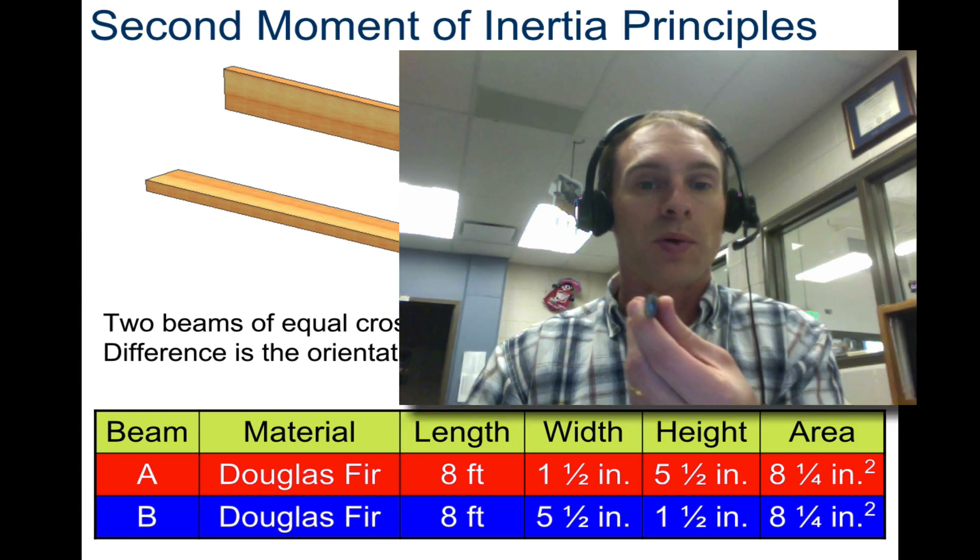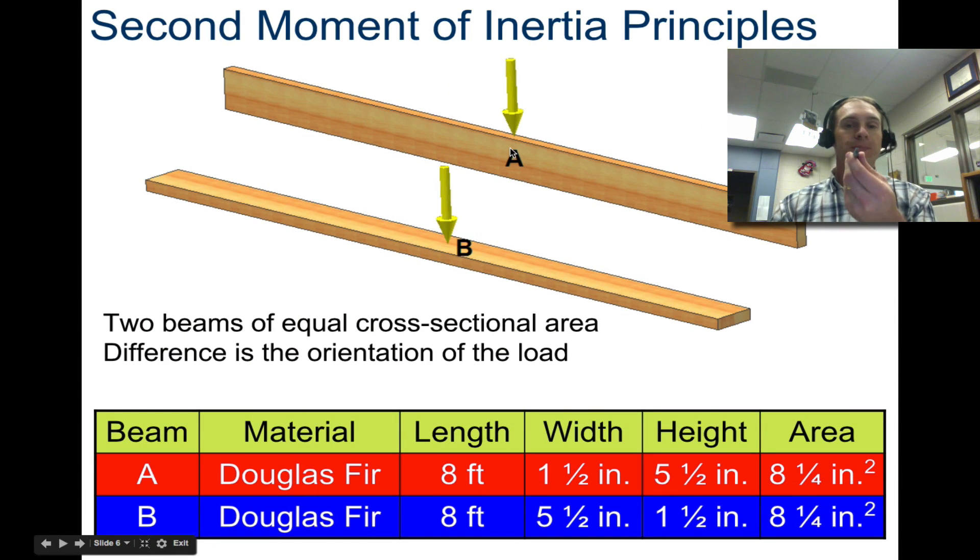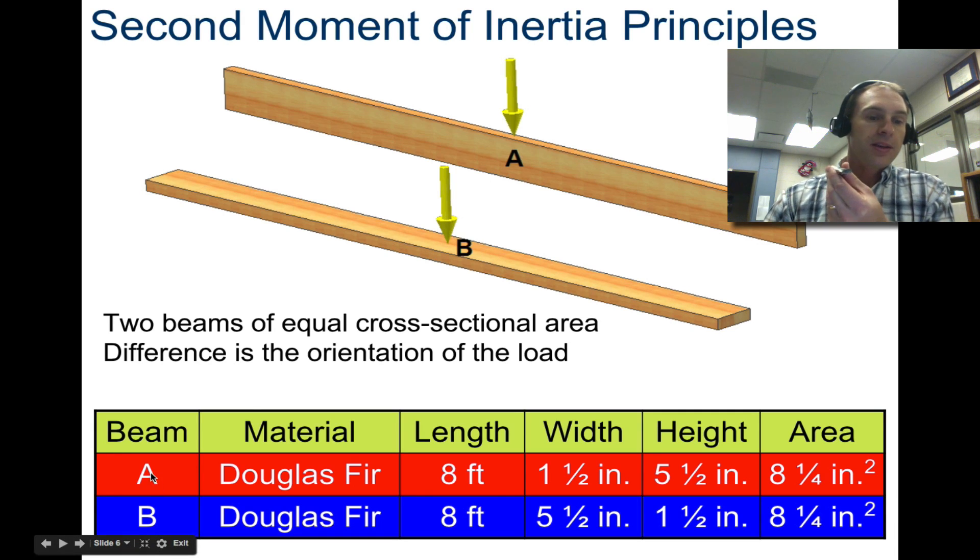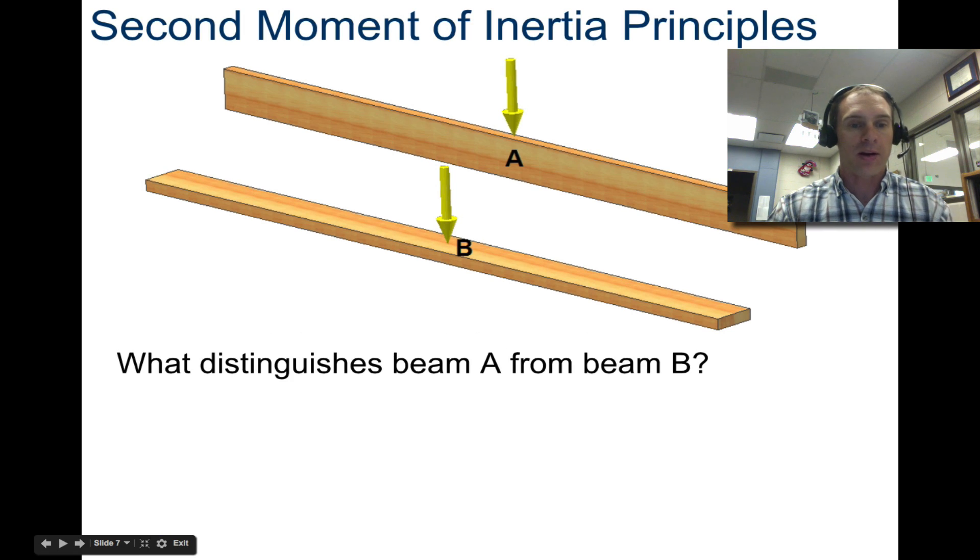I'm going to show you this exact example. In example A here, we have a board or this pencil on edge, and B, it's flat. Your second moment of inertia principles are different for each one. The beam properties are down here below, so just kind of watch along for this. Same material, same length, same width and height, but you can notice that they're opposite because we changed the orientation. And the total same area. So what distinguishes beam A from beam B?